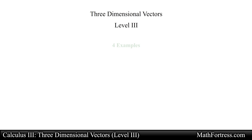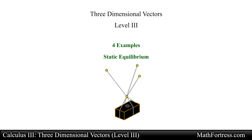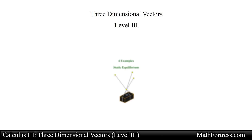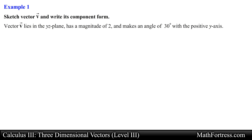Three Dimensional Vectors Level 3. In this final video on three dimensional vectors we will go over four examples. The last example will be a static equilibrium problem in three dimensions. Let's go ahead and take a look at the first example: sketch vector v and write its component form. Vector v lies in the yz plane, has a magnitude of 2, and makes an angle of 30 degrees with the positive y axis.